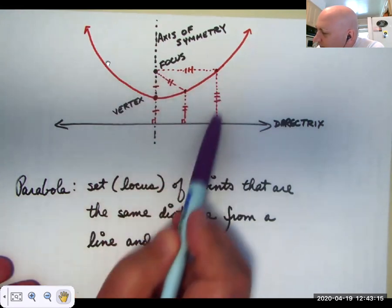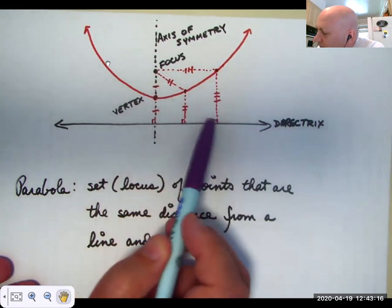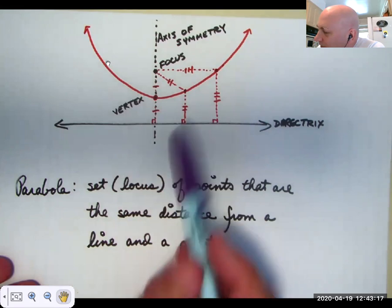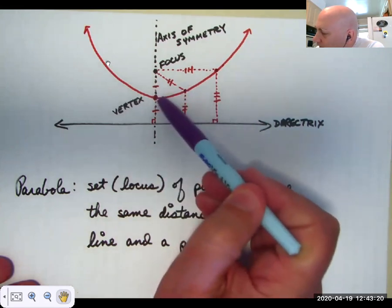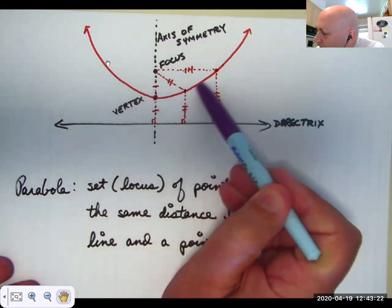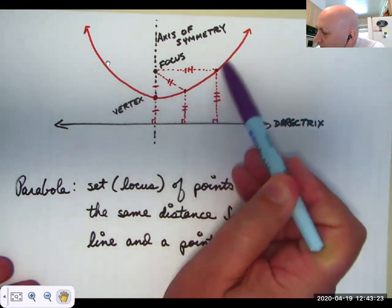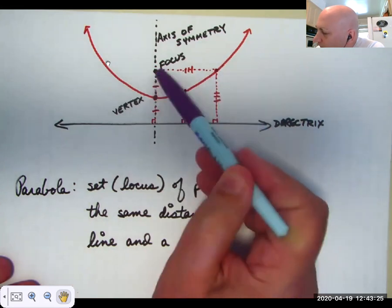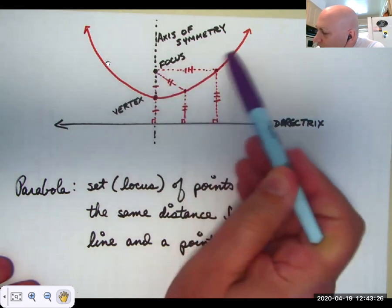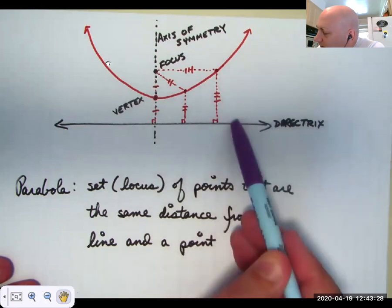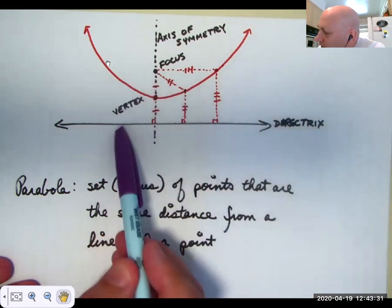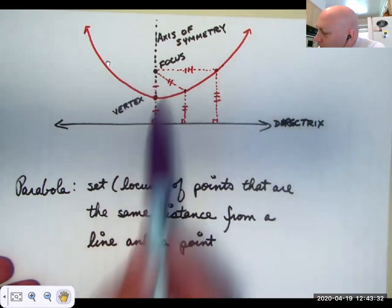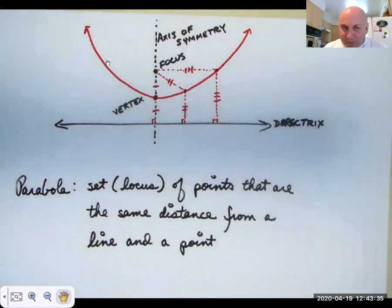Over here you can see this distance and this distance are the same, and notice if we're measuring distance from a line it has to be a perpendicular distance. So this distance and this distance are the same, meaning this point has to be on the parabola. You can see that all of these points are going to be the same distance from the focus to the directrix — that's what generates a parabola algebraically.